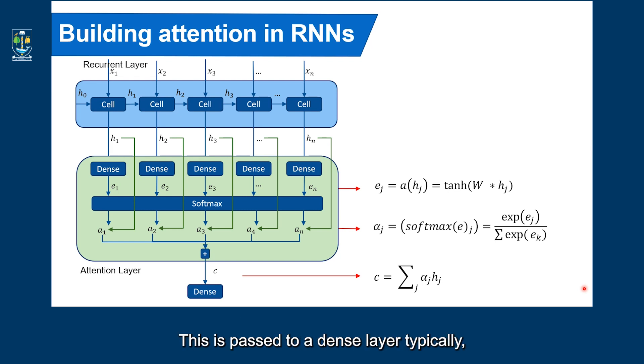This is passed to a dense layer, typically, which is a softmax layer, and usually, it outputs a distribution of the potential next, let's say, state or word. So we saw here that attention mechanism is powerful, and it helps the network decide which previous states of the recurrent layer are important for predicting the next step in a sequence.